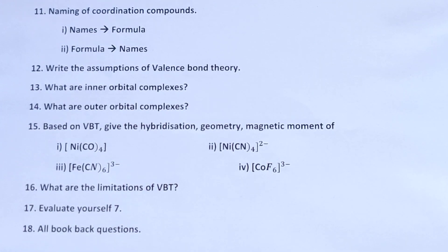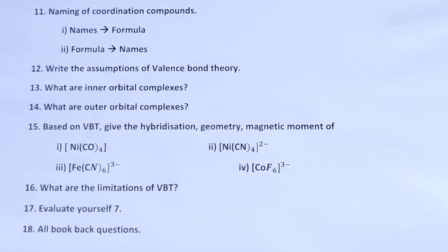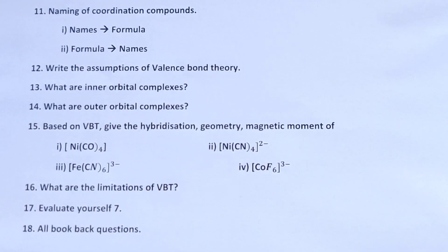Then based on VBT, give the hybridization, geometry, magnetic moment of complexes. This is the four of the book worked out. What are the limitations of VBT. Evaluate yourself 7 and all book back questions except in the reduced portion of the questions.